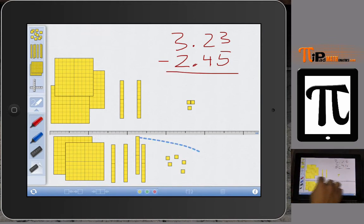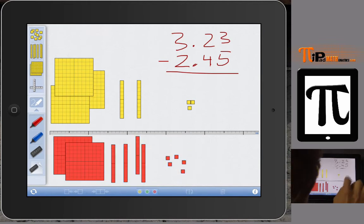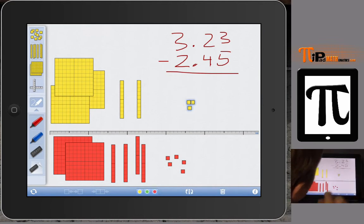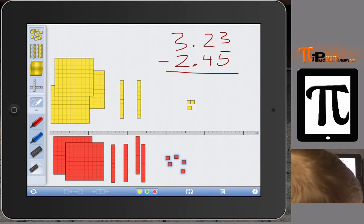One thing I like about this app is you can change the color of the ones that you are subtracting to red, which helps them get ready for upper level middle school mathematics and the idea behind positives and negatives where positive 1 and negative 1 will go to 0. So we have 3 and 23 hundredths minus 2 and 45 hundredths. We need to subtract.